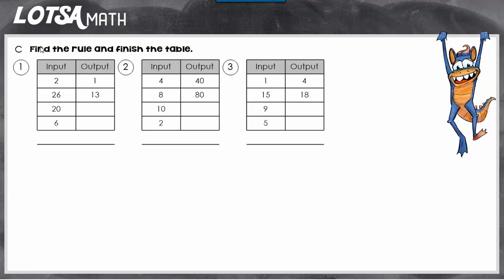On number 1, the first thing we need to do is find the rule. So look at the table, and let's look at the inputs. If we put in a 2, it's going to come out a 1. If we put in a 26, it's going to come out a 13. Something is happening to the number between the input and the output, and that's the rule.